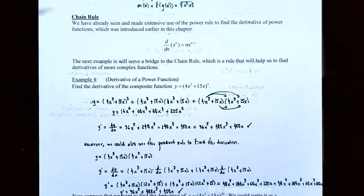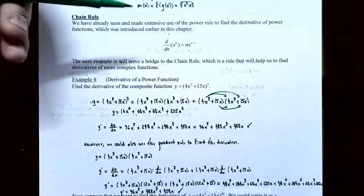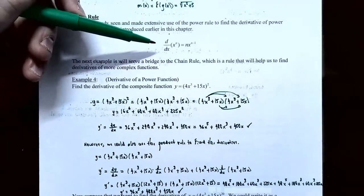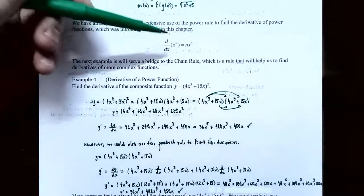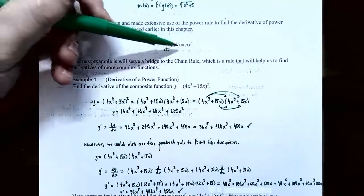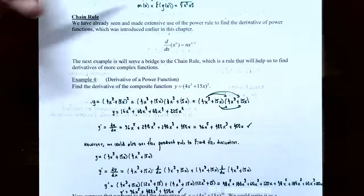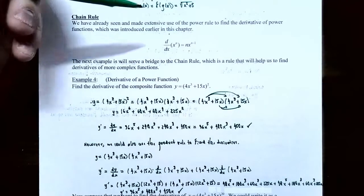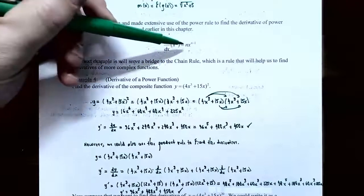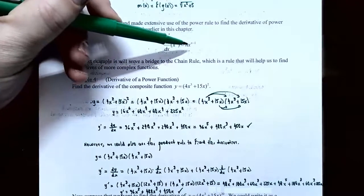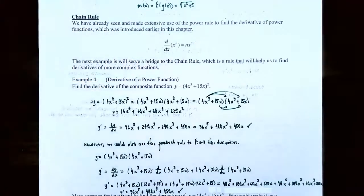We've already seen how to make extensive use of the power rule to find the derivative of power functions, but now we're going to talk about a more generalized power rule using the chain rule. This is the power rule introduced earlier: the derivative d/dx of x to the n, where x is the variable and n is a real number. We bring the power down as a coefficient and subtract one from the exponent, giving n times x to the n minus one.